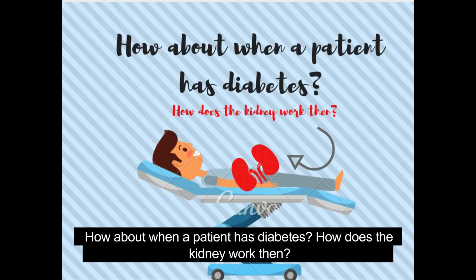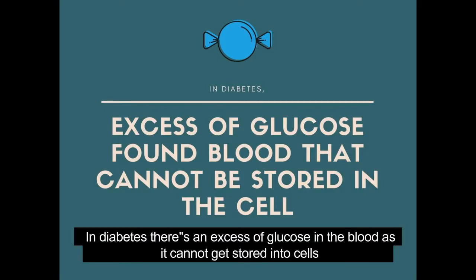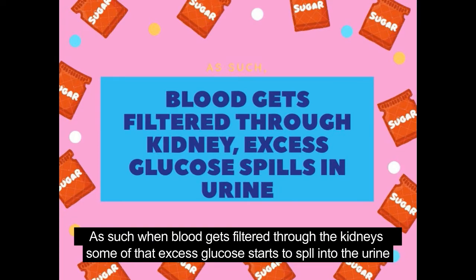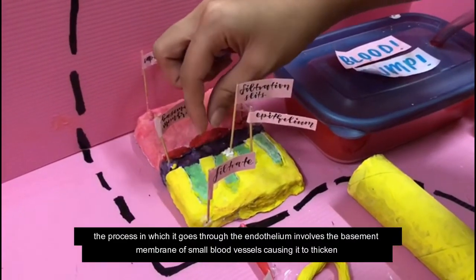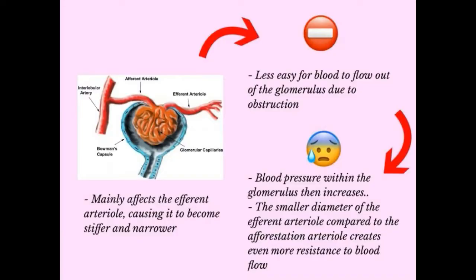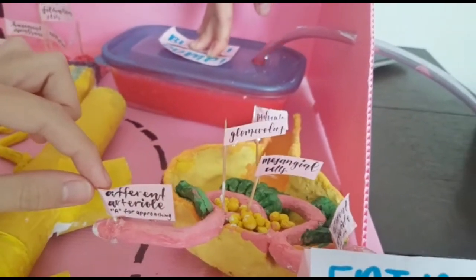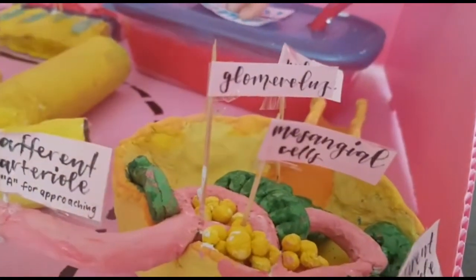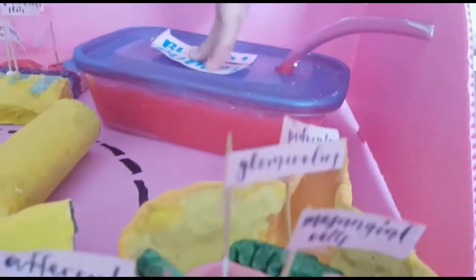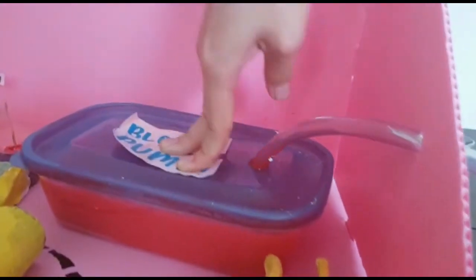How about when a patient has diabetes — how does the kidney work then? In diabetes, there is an excess of glucose in the blood as it cannot get stored into cells. When blood gets filtered through the kidneys, some of the excess glucose starts to spill into the urine. Furthermore, as glucose passes through the endothelium, the process involves the basement membrane of small blood vessels, causing it to thicken. This particularly affects the efferent arteriole, causing it to become stiffer and more narrow. This makes it difficult for blood to leave the glomerulus, as its exiting pathway is obstructed, thereby increasing the pressure within the glomerulus. The afferent arteriole dilates simultaneously, allowing more blood to flow into the glomerulus, increasing pressure even further. High pressure in the glomerulus leads to an increase in the amount of blood filtered per minute, known as hyperfiltration.